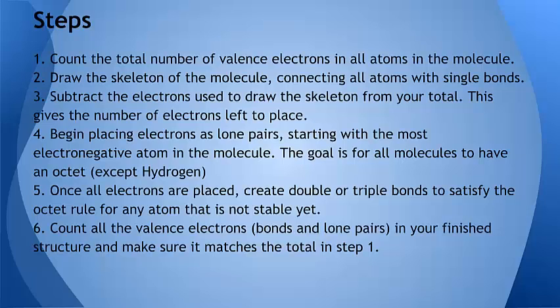So here are the steps, and we'll quickly go through them. First, count the total number of valence electrons in all of the atoms in the molecule. Second, draw the skeleton of the molecule. The central atom is usually written first. There are some things about the number of bonds that atoms normally want to form that we'll consider. Once you've created the skeleton, connecting all atoms with single bonds, subtract all those electrons from the total. What's left is the number of electrons you have left to place.